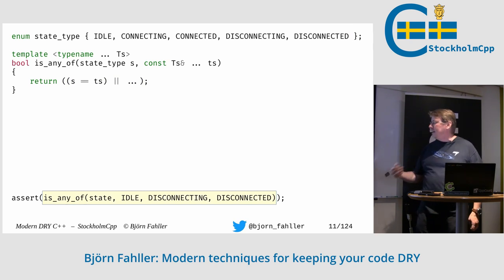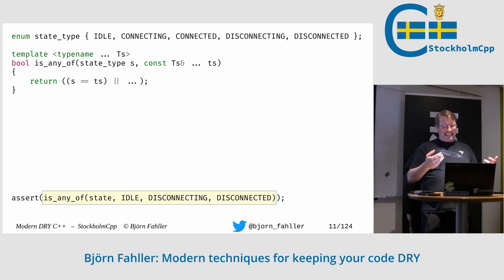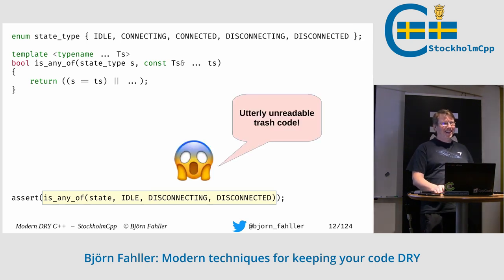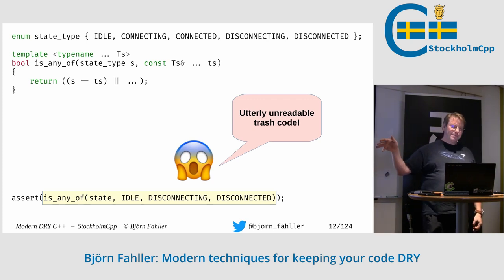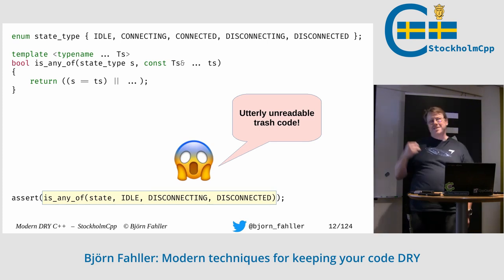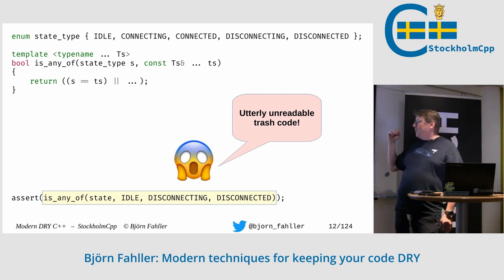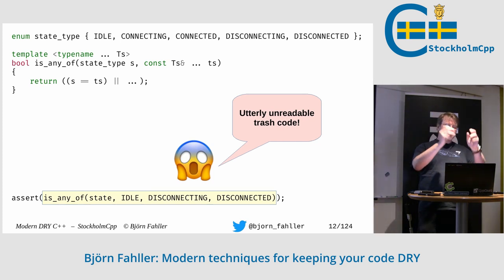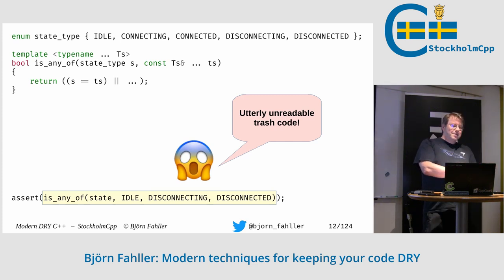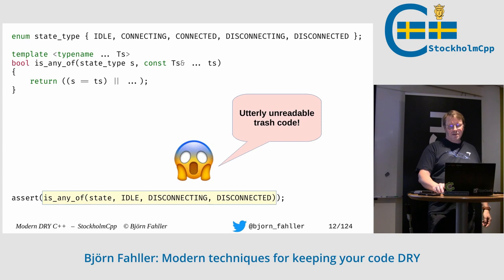So I can write: assert `is_any_of(state, idle, connecting, disconnected)`. Well, it did take away the repetition. But seriously, this is absolutely horrible code. If you wrote this and I was reviewing it, I would politely say that this is utterly unreadable trash code. Because when you see `is_any_of(state, idle, disconnecting, disconnected)` you have absolutely no idea what that means without looking into the implementation of `is_any_of`. This is not good code. Scrap that idea — it wasn't good, but worth trying.